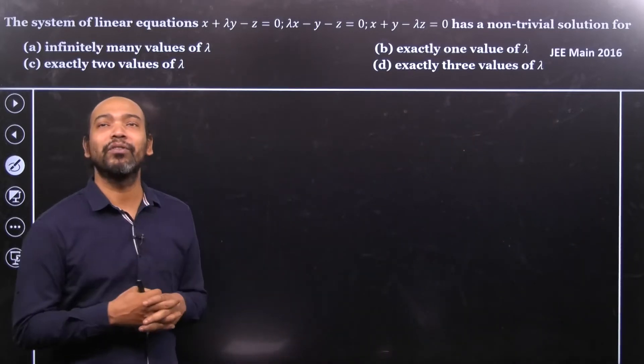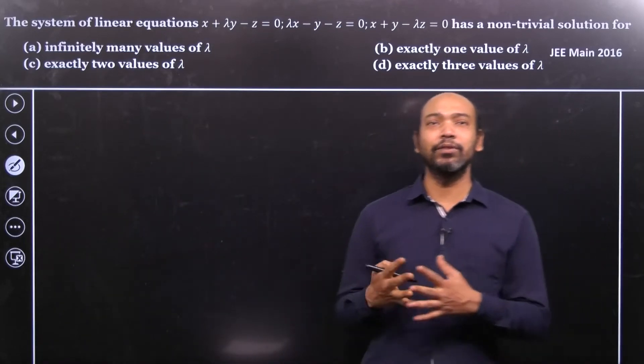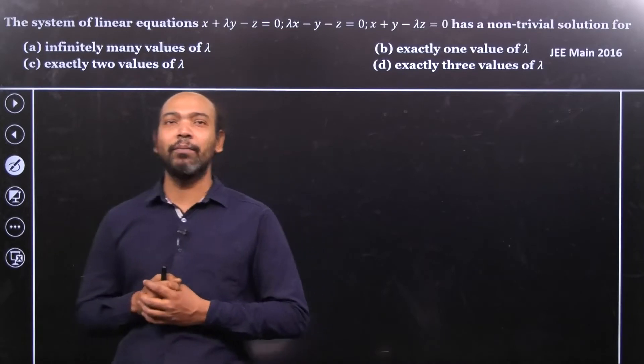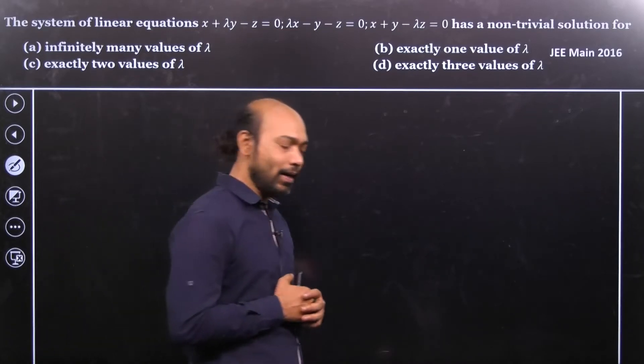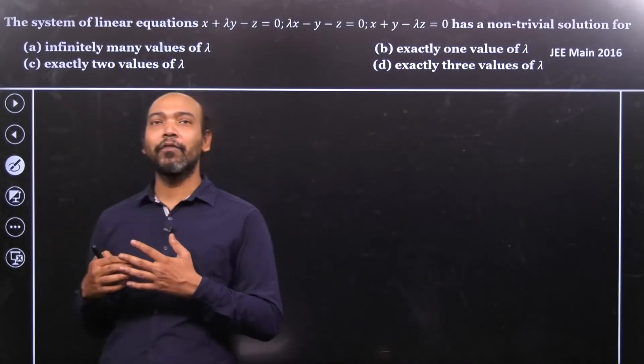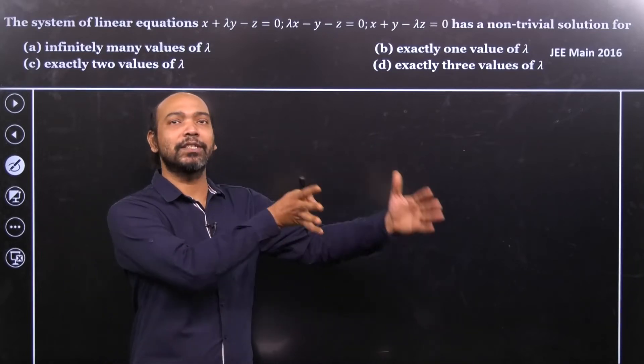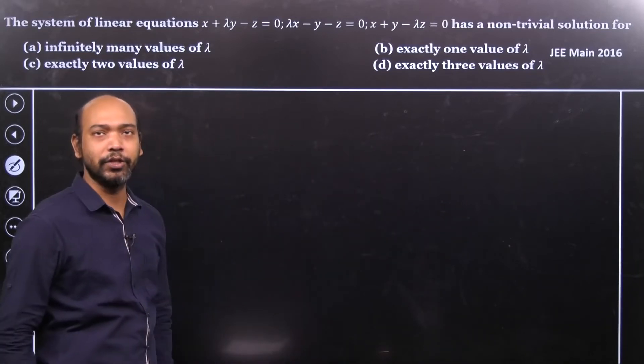That's a non-trivial solution - not the zero solution, because the system is actually a homogeneous system. What is the condition for that? If I write all the way in a matrix form, the coefficient matrix determinant must be equal to zero. That's the condition.